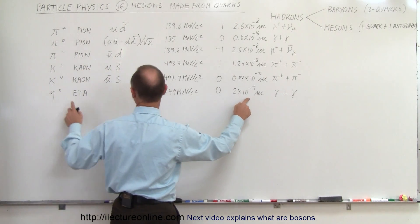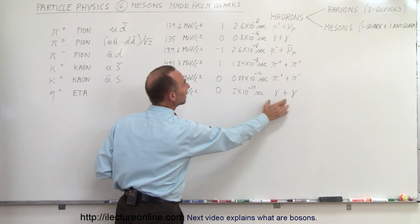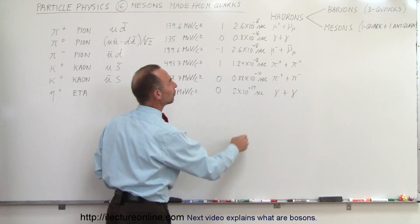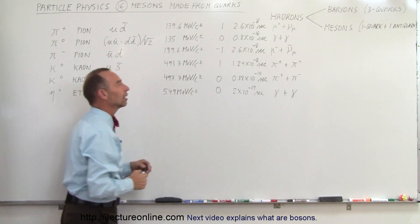Notice the lifespan of this particle right here, the eta particle. Again, when it decays, it gives you two photons. And here, this is also a very short lifespan.